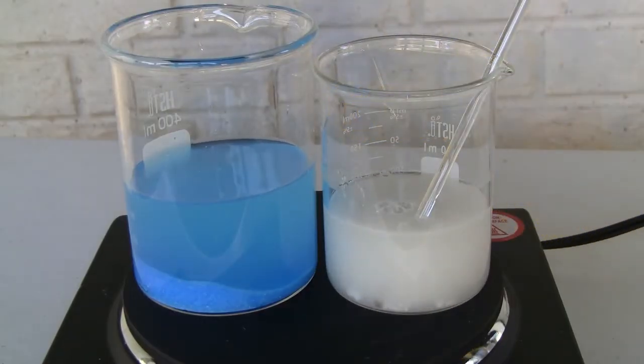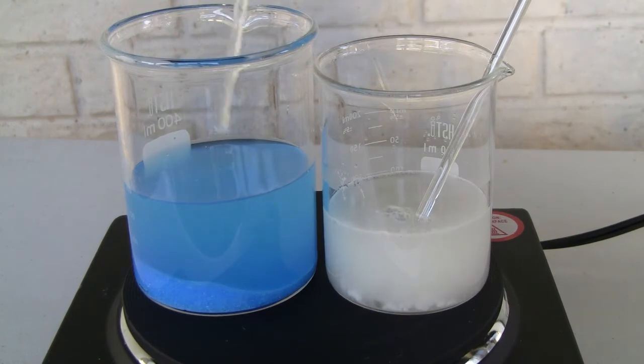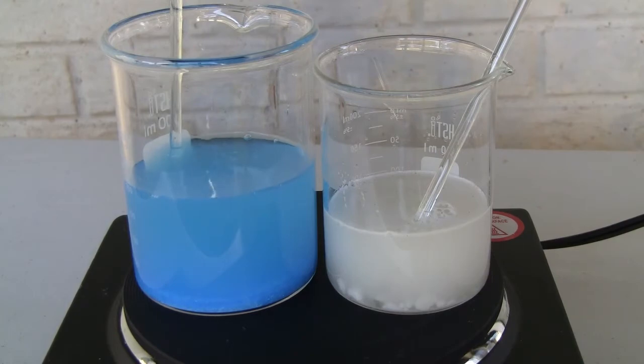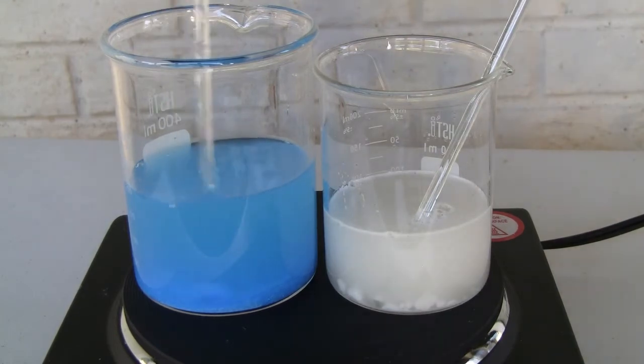To start, I dissolved the copper sulfate pentahydrate in about 175 milliliters of distilled water and the sodium carbonate in about 100 milliliters of water. The solution is then heated to make sure all solids are dissolved.